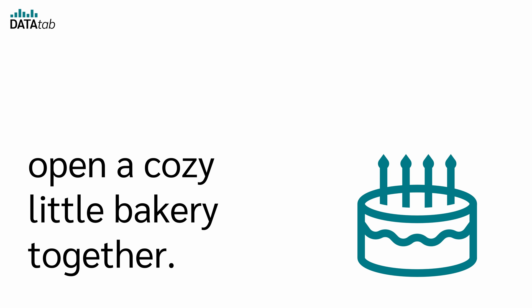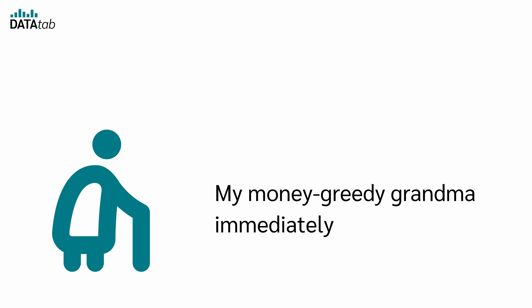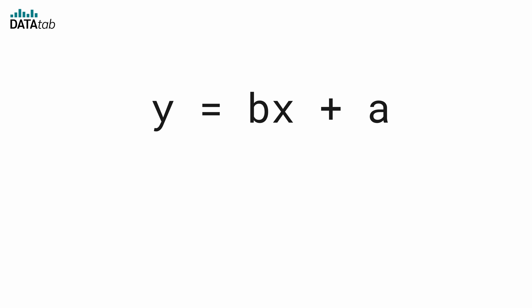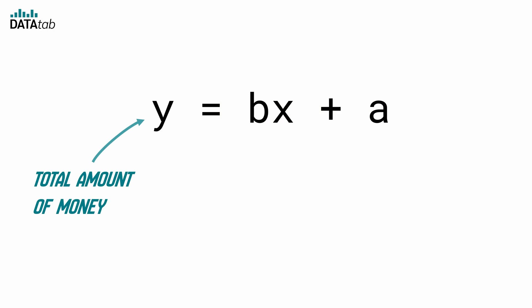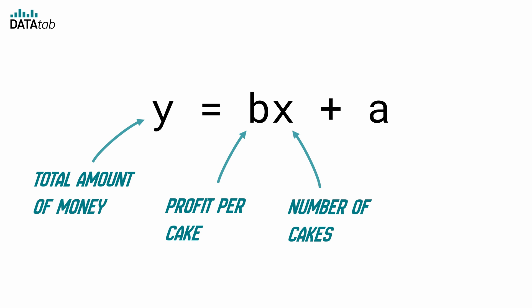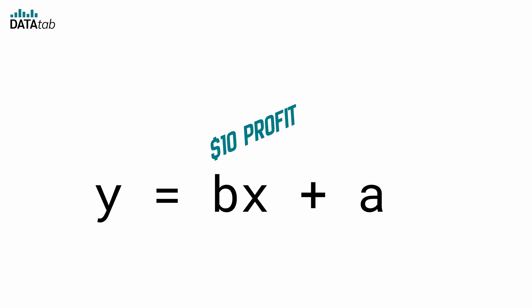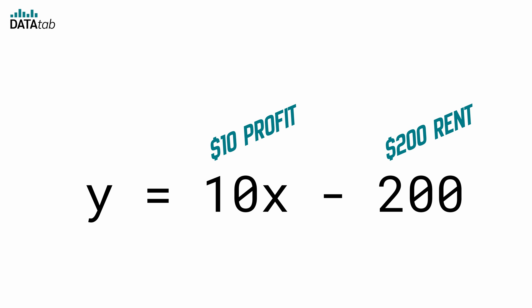Let's open a cozy little bakery together. My money-greedy grandma immediately asks us how much we earned with it. Here's where the equation comes into play — it's like our secret recipe for predicting our earnings. Y is the total amount of money we're going to make from selling cakes. B is our profit per cake — the growth of our profit with every cake sold. X is the number of cakes we sell. A is our fixed cost — the money we have to pay no matter how many cakes we sell. Imagine we make $10 profit for each cake after covering ingredient costs. So for every cake we sell, we are adding $10 to our profit. Let's say our bakery's rent is $200 per month — that's our A.